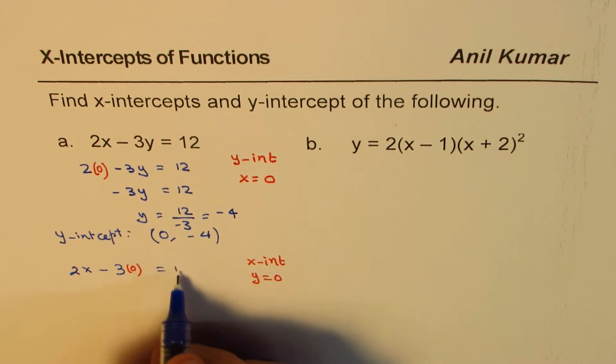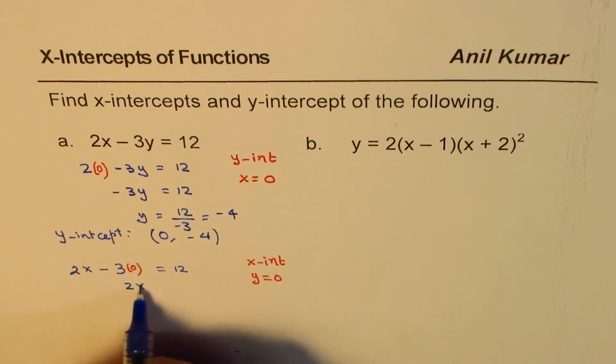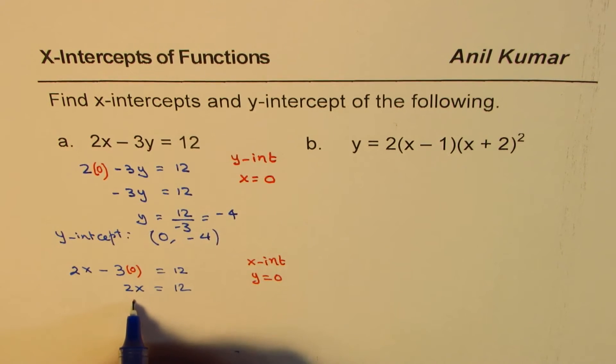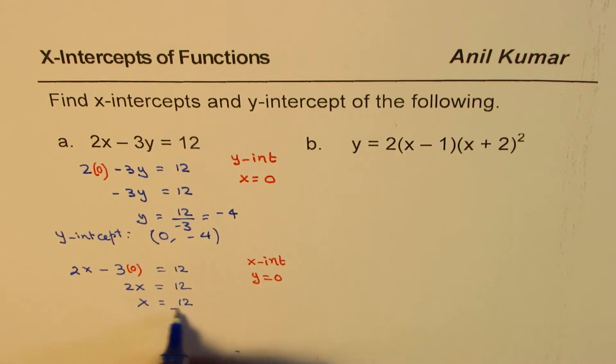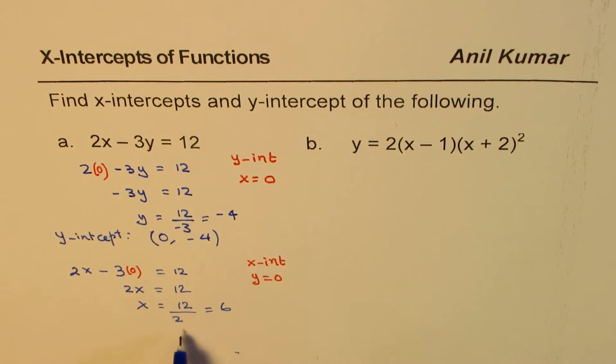That means 2x equals 12, or we'll divide by 2, so we get divide by 2 which is 6. And therefore the x-intercept for us will be 6 and y value 0.